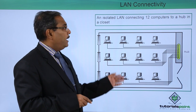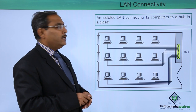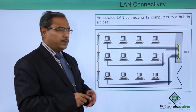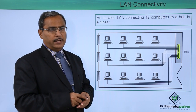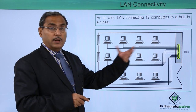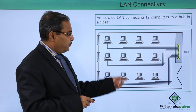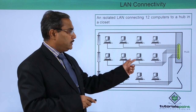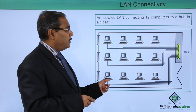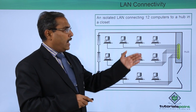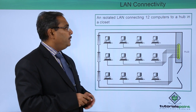We have an isolated LAN connecting 12 computers to a hub in a closet. Hub construction is not so popular now — there will be repeaters or some other servers instead. Here multiple computers, 12 of them, are connected with the hub, forming an isolated LAN.